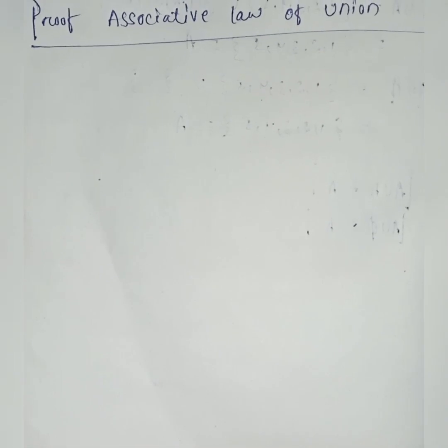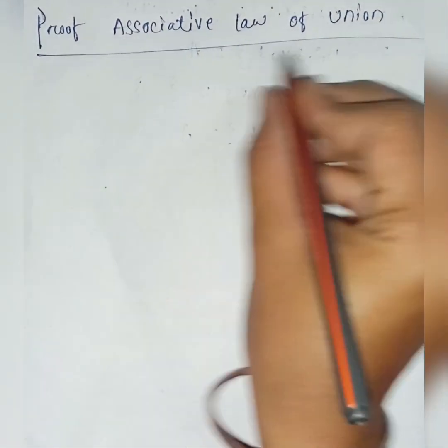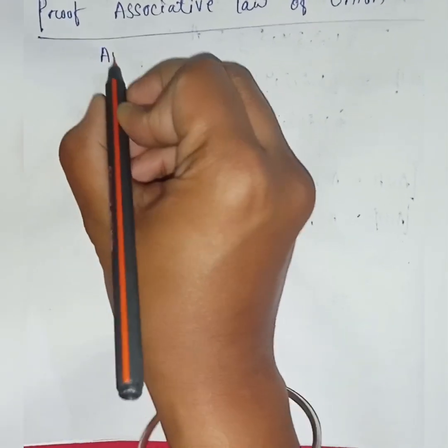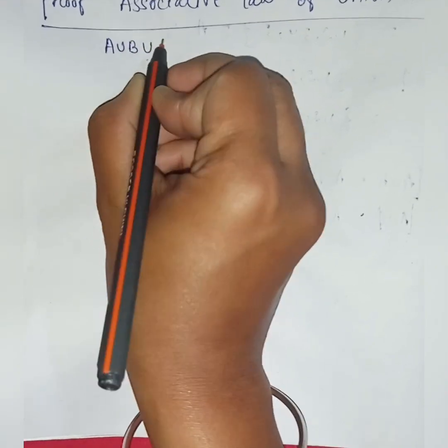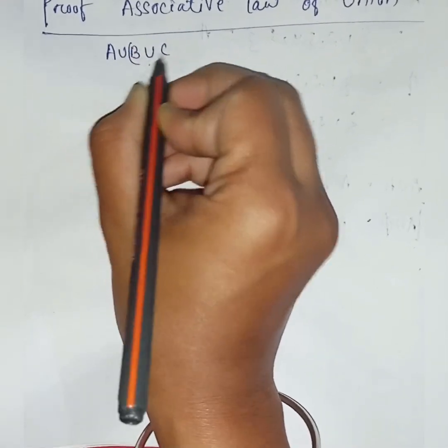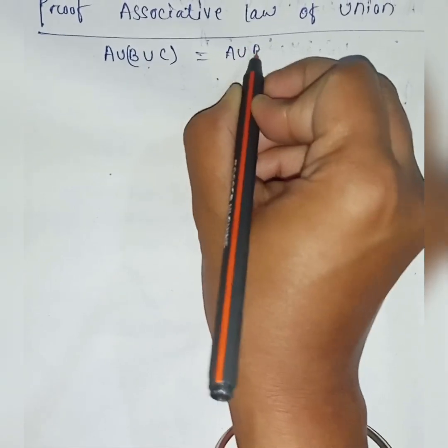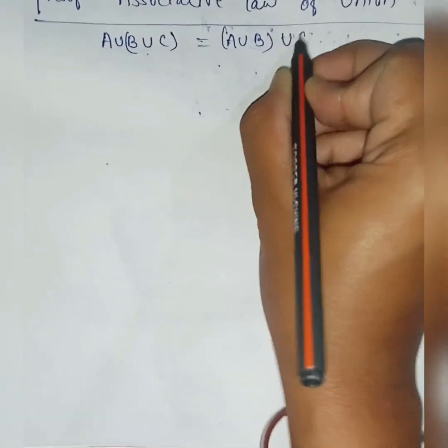In this video, I tell you the proof of associative law of union. What is associative law of union? It is A union B union C is equal to A union B union C.